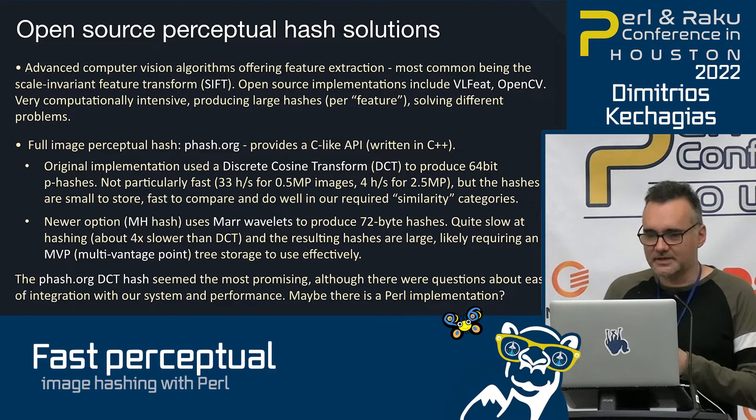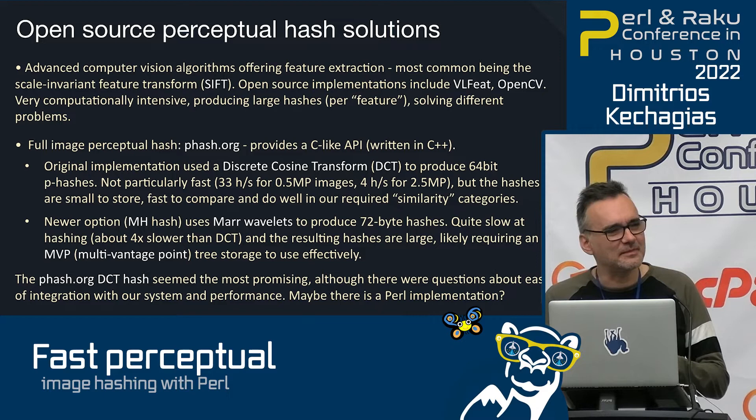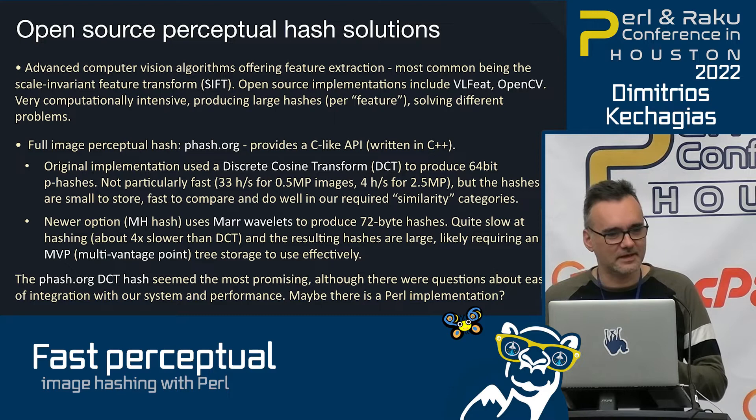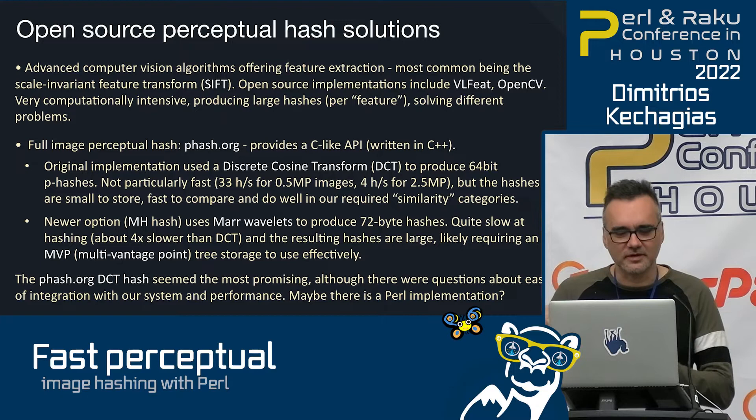There is a Python image hash library, but I wouldn't want our Perl app to depend on Python — deployment wouldn't be so easy. I did want to give it a try but couldn't install it because I had to downgrade Python. I don't know if it's any better than phash.org anyway.